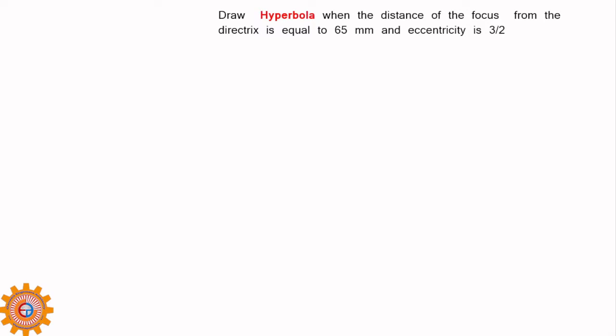Now, draw hyperbola when the distance of the focus from the directrix is equal to 65 mm and eccentricity is 3 by 2. Eccentricity is now more than 1. Eccentricity is 1 that is called parabola. Eccentricity is less than 1, it is ellipse. Eccentricity is more than 1, it is hyperbola.